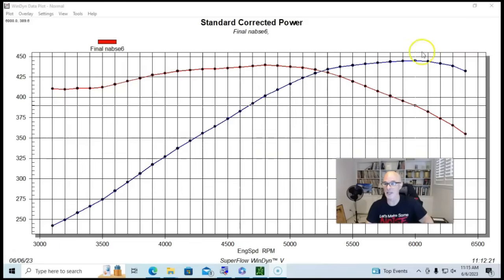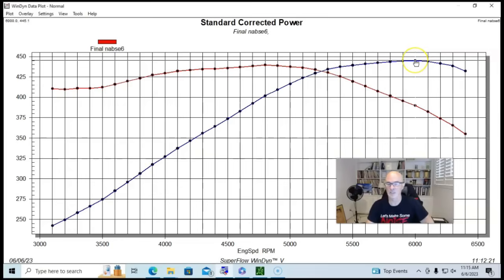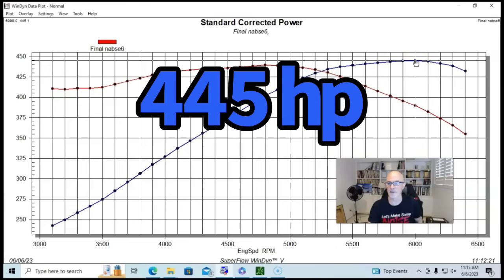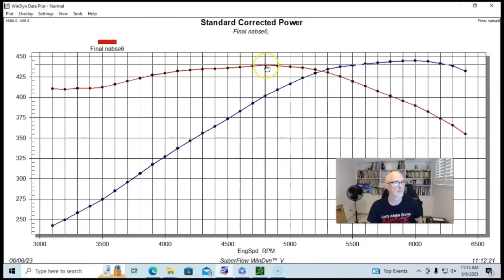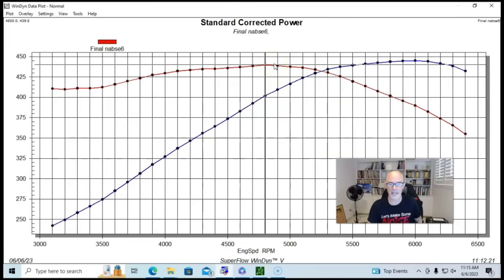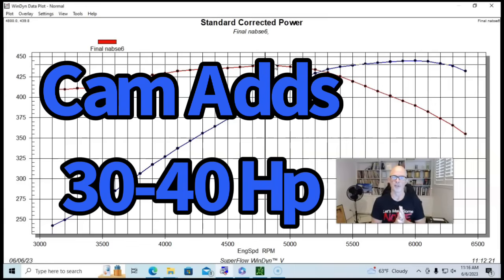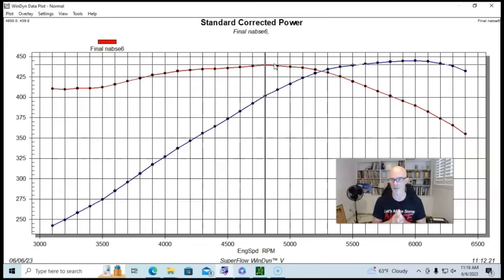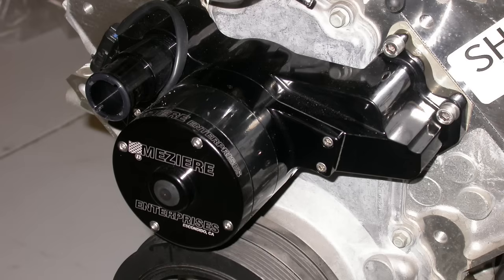It still had the stock LS1 intake manifold on there. We did put larger injectors in because we knew we were going to run it with a supercharger. It had an aftermarket throttle body, I think it was an AccuFab one, but it was the same size as a stock throttle body. We also ran it as we always do with a Meziere electric water pump, no accessories and stuff.